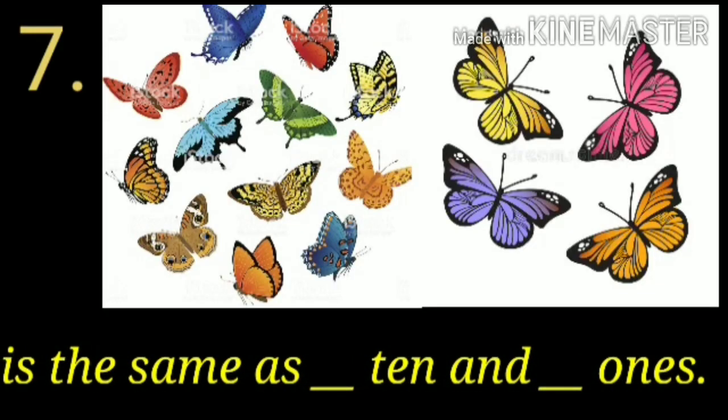Now, in question number 7, butterfly is same as dash 10 and dash 1s. Count it and try to do the answer. Yes! There is one 10 and four 1s.